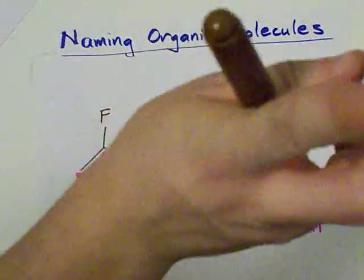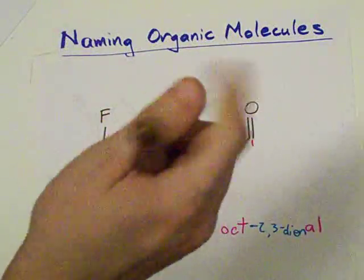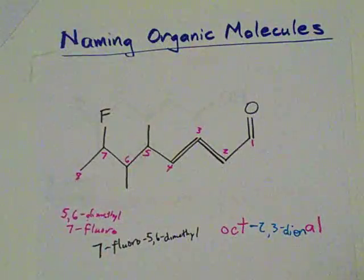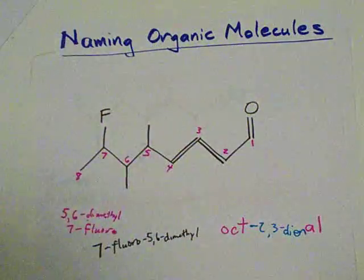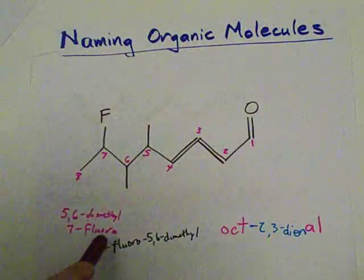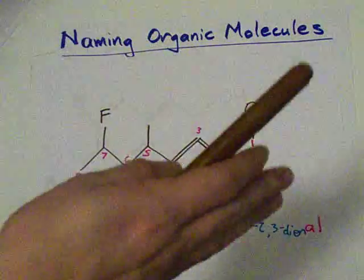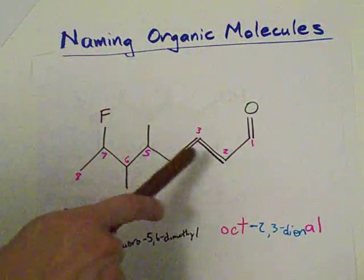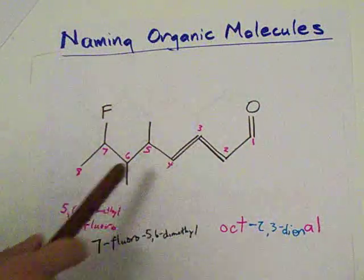Because you consulted Chemist Nate when you had to name these molecules. True story. Anyway, what I want to point out is that you may look at this and say, oh, seven, five, and six seem like kind of high numbers. Maybe we should have named our carbon chain from the other side. Look.